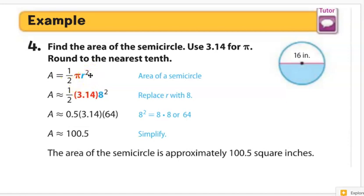So we're just going to go ahead and plug in all of our numbers. So area is about, we use the about symbol, 1 half times pi, which is 3.14.